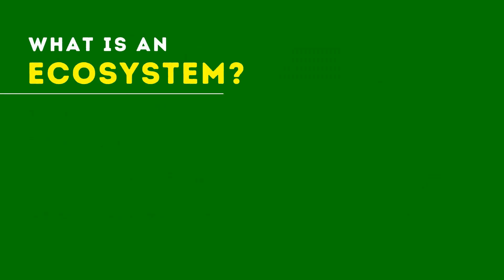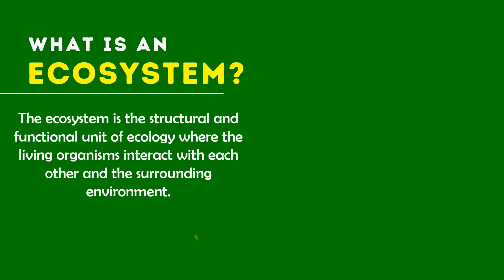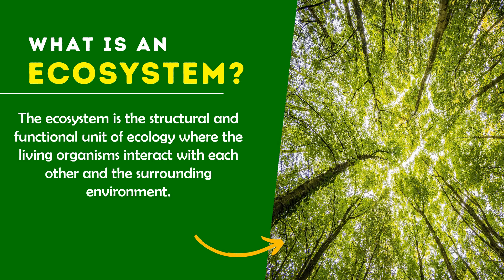First, what is an ecosystem? Ecosystem is the interaction between the living organisms and their surroundings, or you can say their environment. It's simply how living organisms interact with each other and how they interact with their environment. So that is the ecosystem.